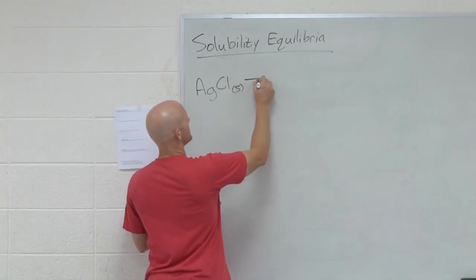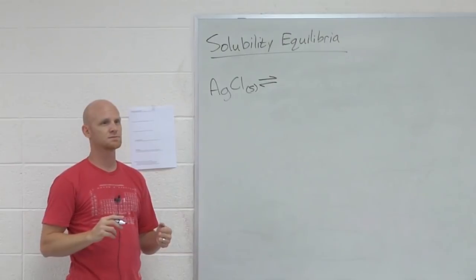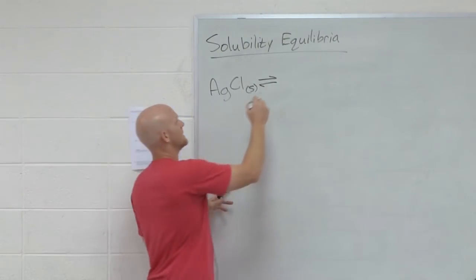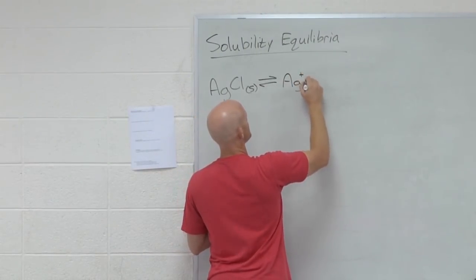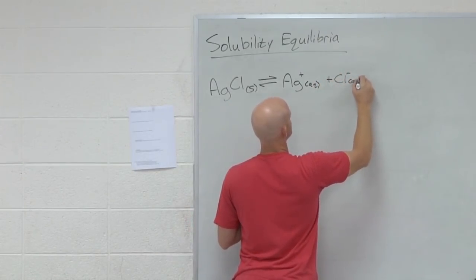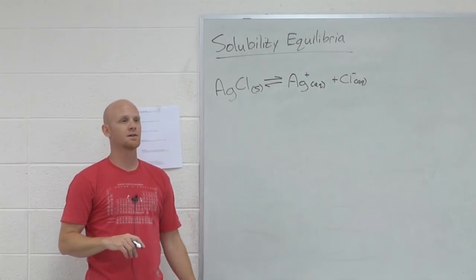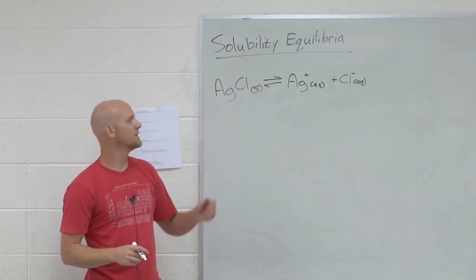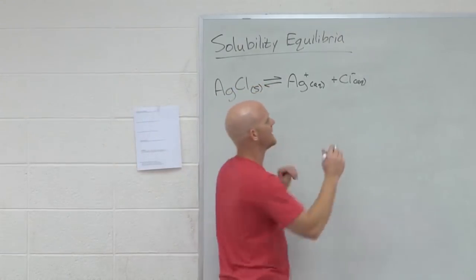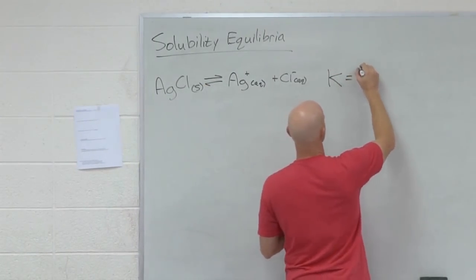And so if you look here, when this dissociates, what ions do we actually get as products? Awesome, Ag plus and Cl minus. When you're doing a solubility calculation, the first thing you should ever do is write out the reaction and write out the equilibrium constant expression. What expression should I get here?